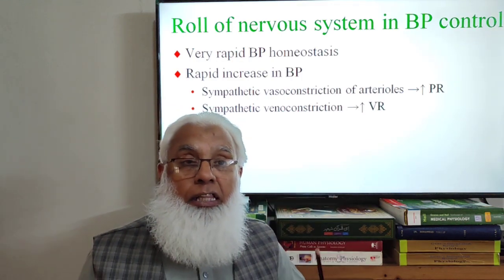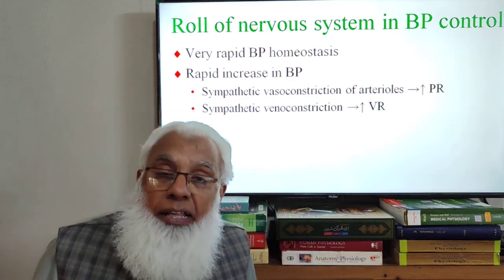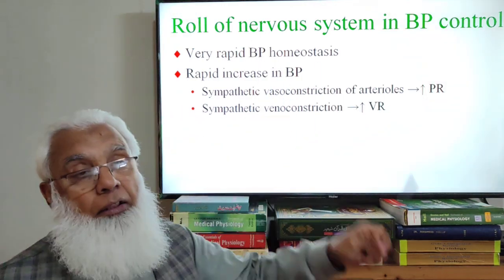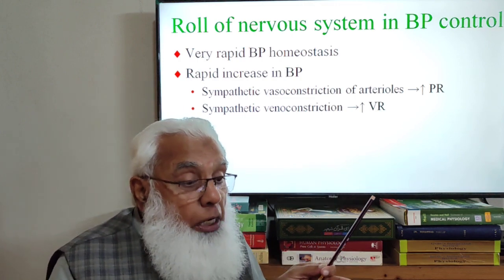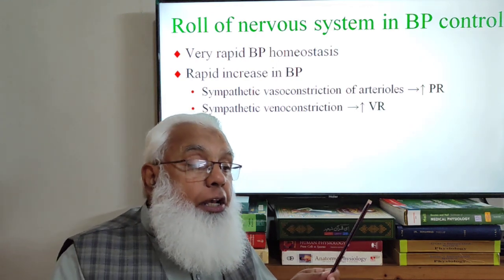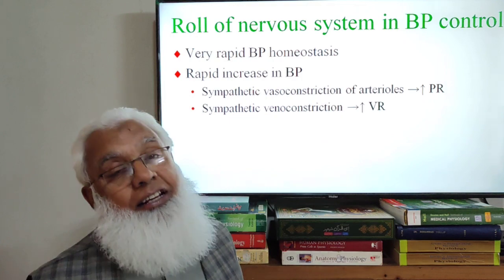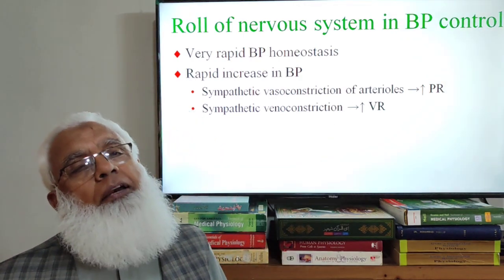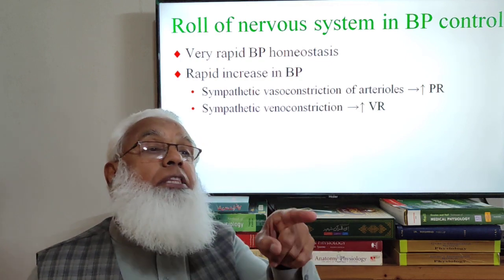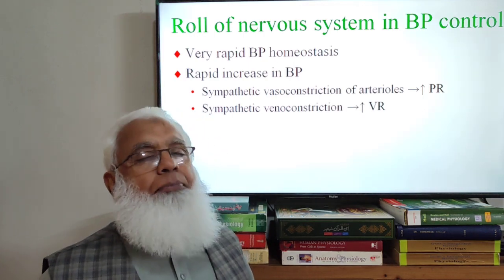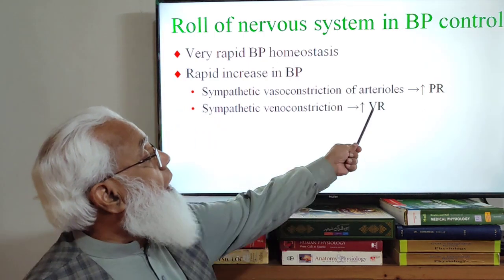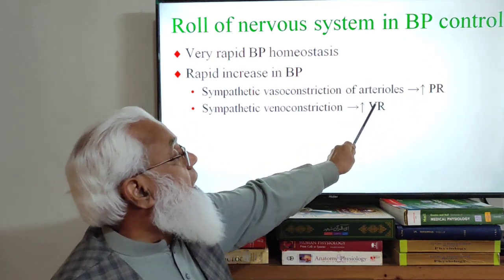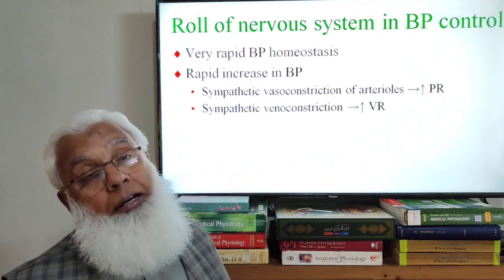Vasoconstriction of resistant vessels causes increased peripheral resistance. Additionally, the sympathetic system also supplies the larger veins. When veins contract — venoconstriction — their total capacity is reduced, causing relocation of blood, which increases venous return. When venous capacity is reduced due to venoconstriction, venous return increases. Through the Frank-Starling mechanism of cardiac muscle, all this increased venous return is pumped, increasing cardiac output.